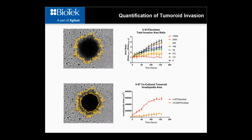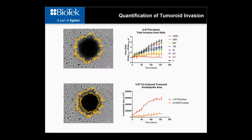By applying the secondary mask around non-invasive portions of the tumoroid, differences in the invasive qualities of the two glioblastoma multiforme cell types become clear. The area covered by invadipodia for U87 fibroblast tumoroids increases dramatically over the 7-day incubation period, while LN229 fibroblast tumoroids show little increase in invadipodia over the same time. This dual analysis has the potential to determine not only how rapidly tumoroid cells are propagating, but also the invasive nature of the cell model.